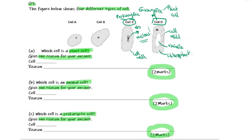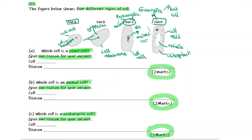An example of a prokaryotic cell is a bacteria cell. Another cell here has a cell membrane but no cell wall, cytoplasm, and a nucleus. Cell A has a cell wall, a cell membrane, a nucleus, and cytoplasm — so does it actually fit into any of the cells we've studied?